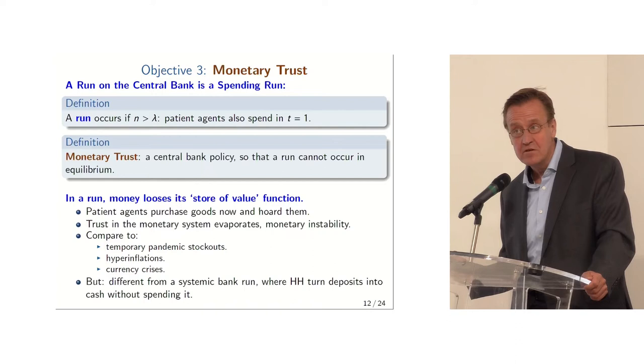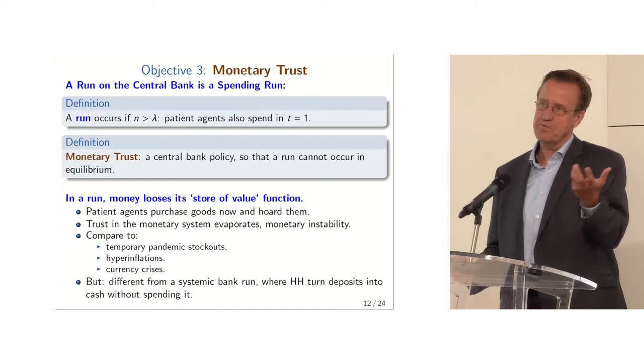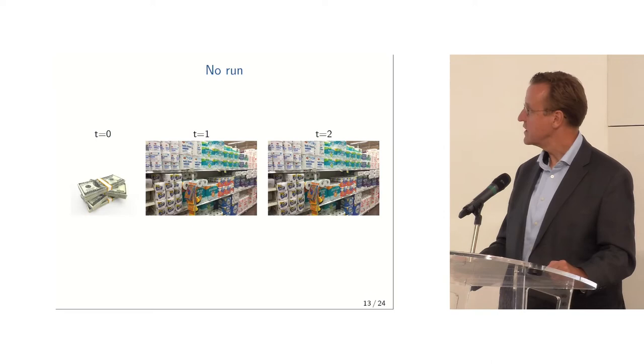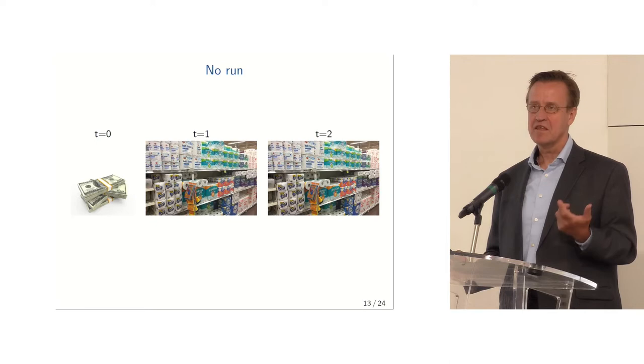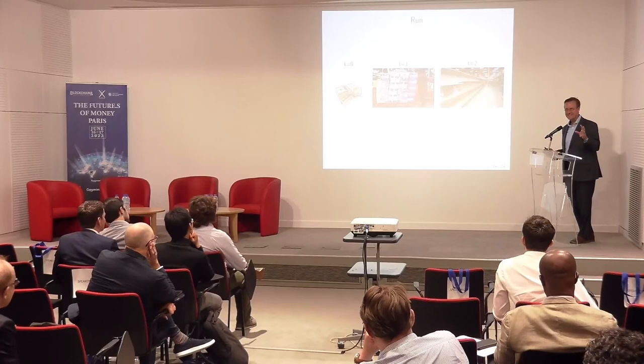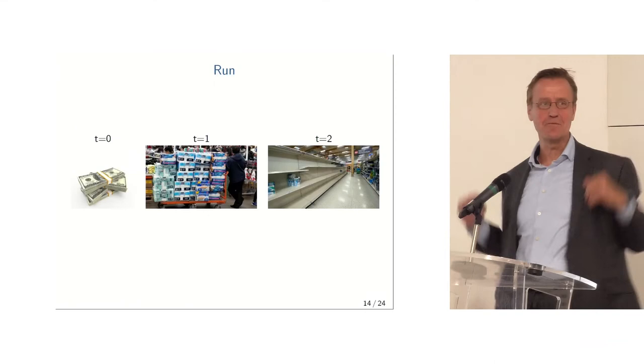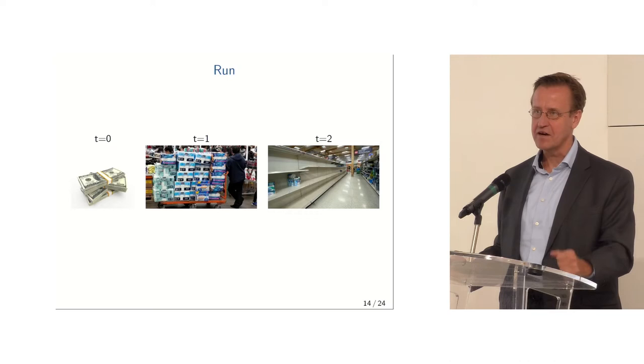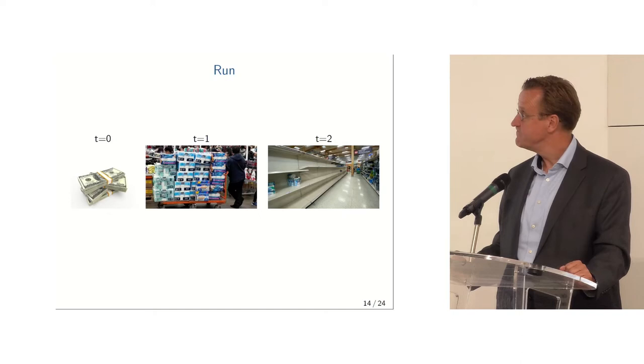The money loses its store of value function. Patient agents purchase goods now and hoard them. The trust in the monetary system evaporates. It's similar to temporary pandemic stockouts, hyperinflation, or currency crises. It's different from a systemic bank run because in a systemic bank run, people take their deposits and turn them into cash. Here's a picture: in normal times, period zero you get some cash; in period one if you're impatient you go shopping and get some toilet paper; in period two you also get some toilet paper. In a run on the currency, in period one everybody goes shopping, nobody has toilet paper in period two. We have certainly seen markets like that over and over again.